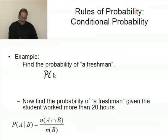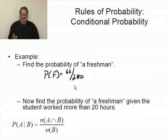So the probability of a freshman is 66 out of 280. Now, if this is sample data, then we should probably also add this hat here to indicate that we're dealing with empirical data.